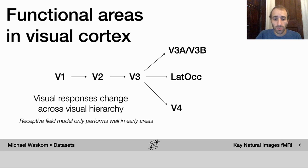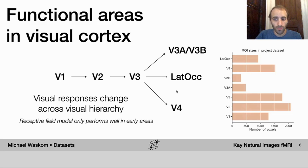And so there's a lot of unanswered questions about just what kinds of response properties these more intermediate regions like V4 and the lateral occipital cortex have, and whether we can truly build models that can use the data in these regions to tell us something about what the subject is seeing.